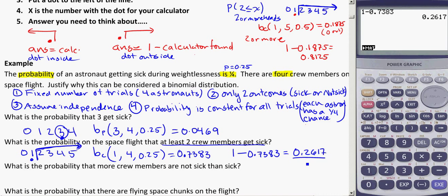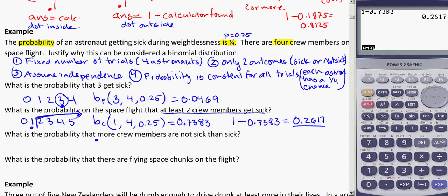Okay. Next one. What is the probability that more crew members are not sick than sick? So the tricky part about some of these binomial problems is just figuring out what they're asking for. So what is the probability that more crew members are not sick than sick? So if four astronauts are sick, that's more of them that are sick than not sick. But I need more that are not sick. Okay. So zero, that counts. That's a lot more that are not sick compared to sick.